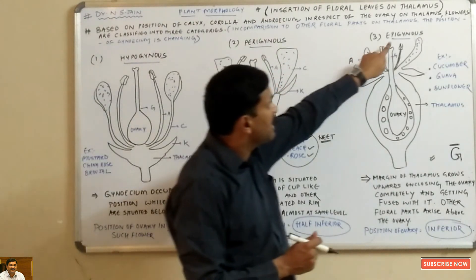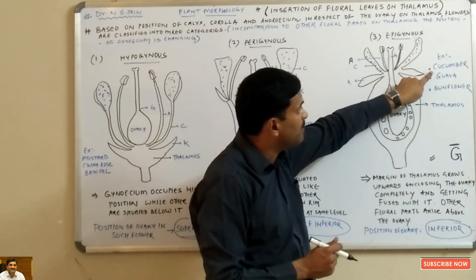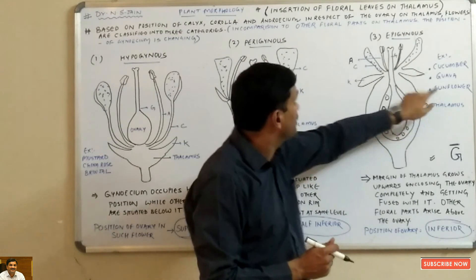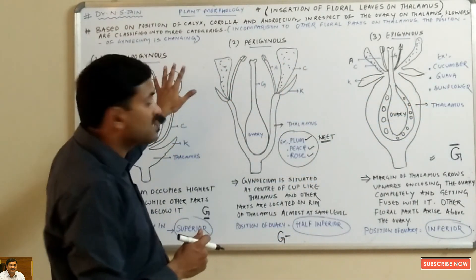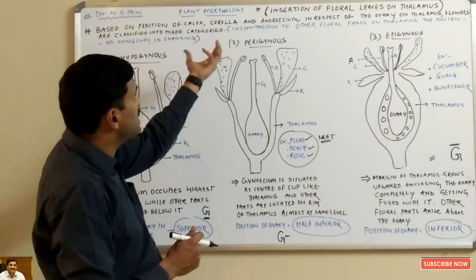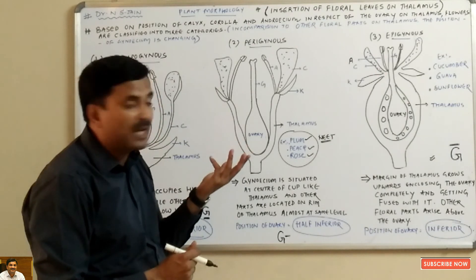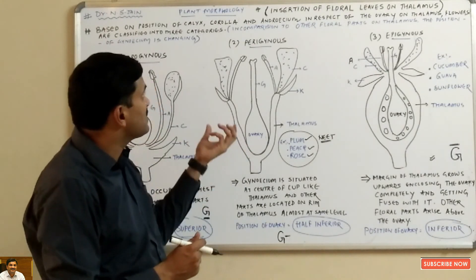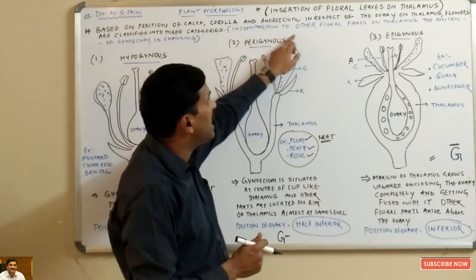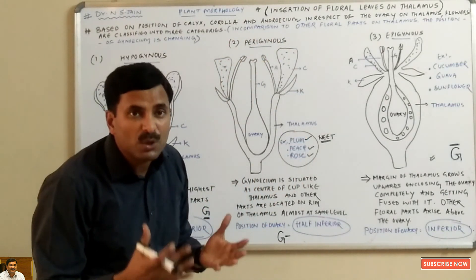Epigynous flowers are present in cucumber, guava, and sunflower. To summarize: we have discussed the position of the calyx, corolla, and androecium in respect of the ovary on the thalamus. In hypogynous flowers the ovary is superior, in perigynous flowers the ovary is half inferior, and in epigynous flowers the ovary is inferior.